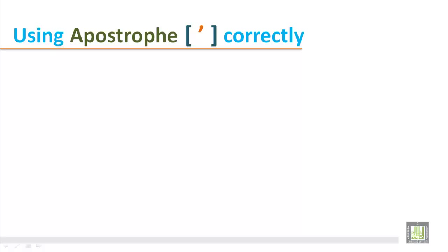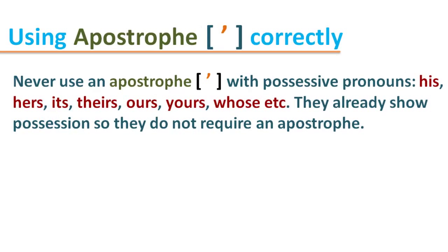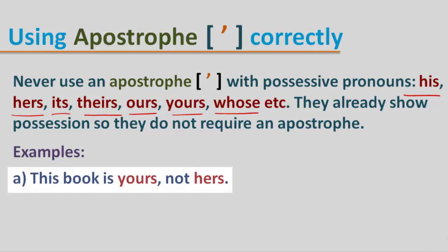Using apostrophes correctly: never use an apostrophe with possessive pronouns such as his, hers, its, theirs, ours, yours, and whose. Possessive pronouns already show possession, so they do not require an apostrophe. For example: 'This book is yours, not hers.' Here, 'yours' and 'hers' are both possessive pronouns and already show possession.